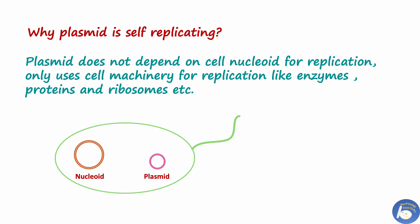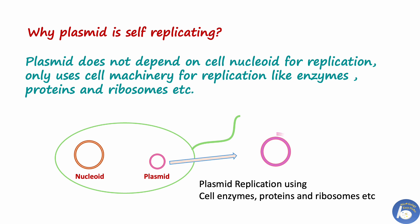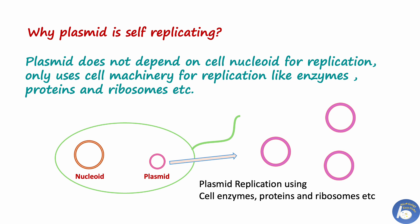Plasmid does not depend on the cell's nucleoid for replication; rather, it uses the cell machinery for replication — like enzymes, proteins, and ribosomes of the host cell. Thus their replication is not linked to any particular stage of the cell cycle. That is why it is called independent genetic material.